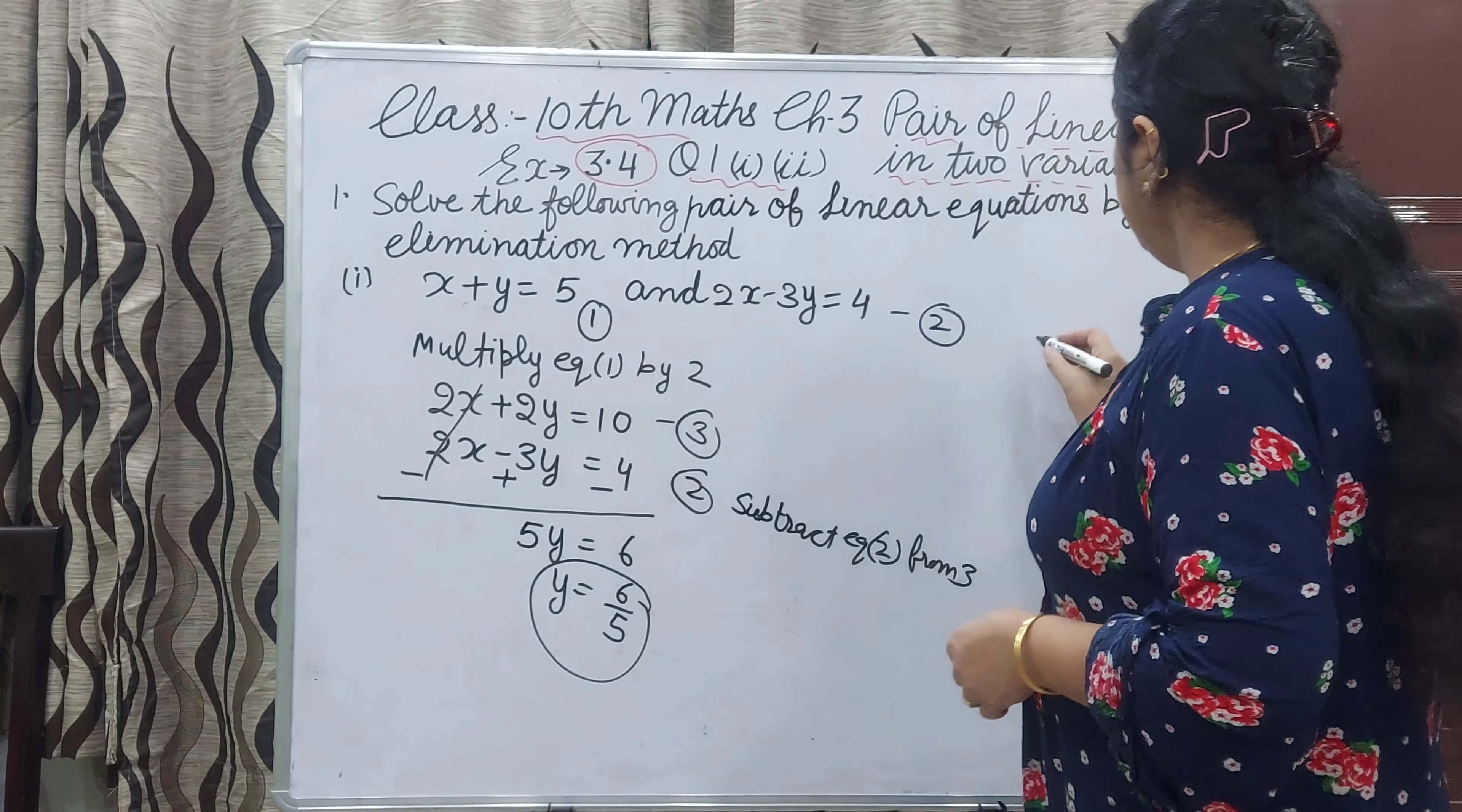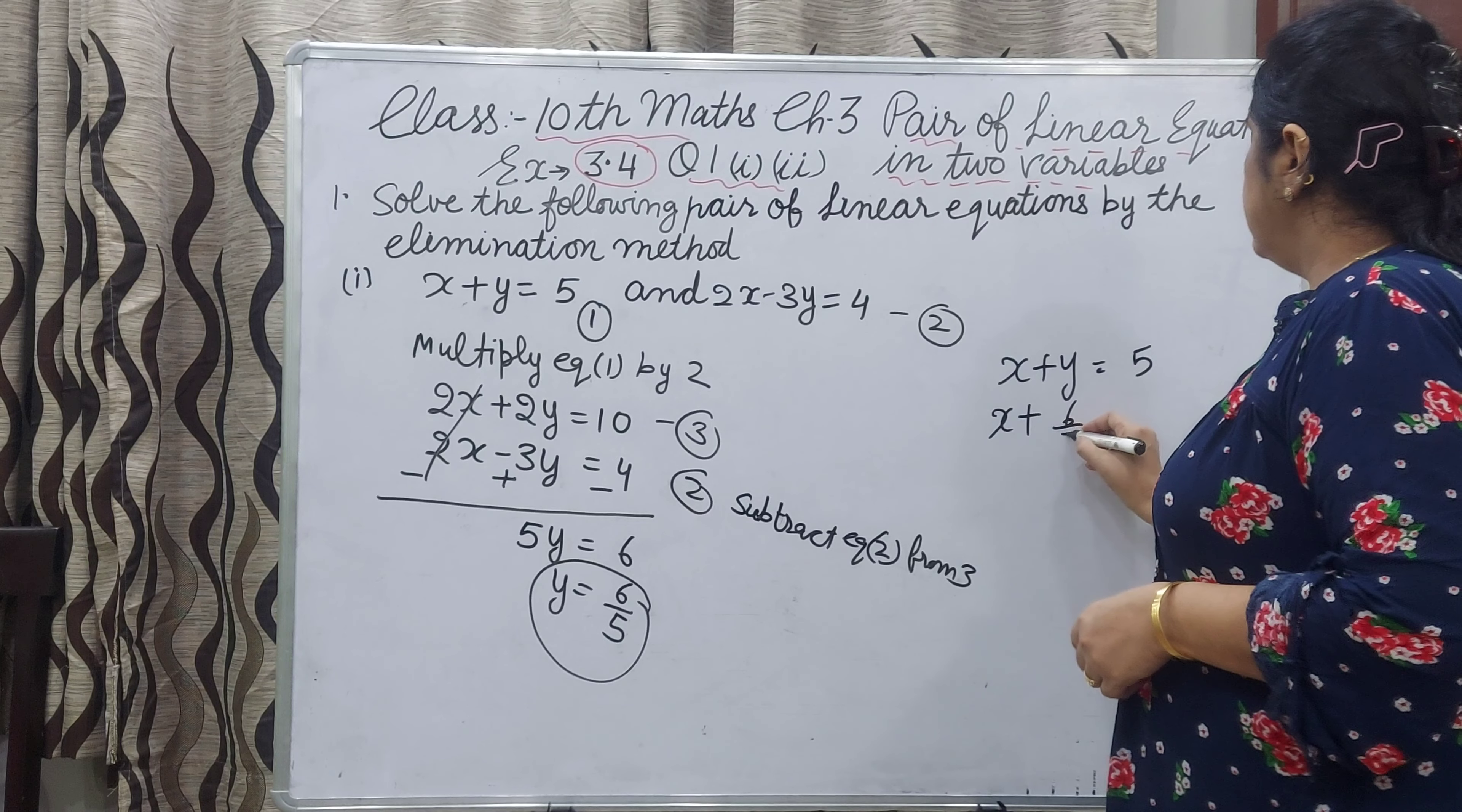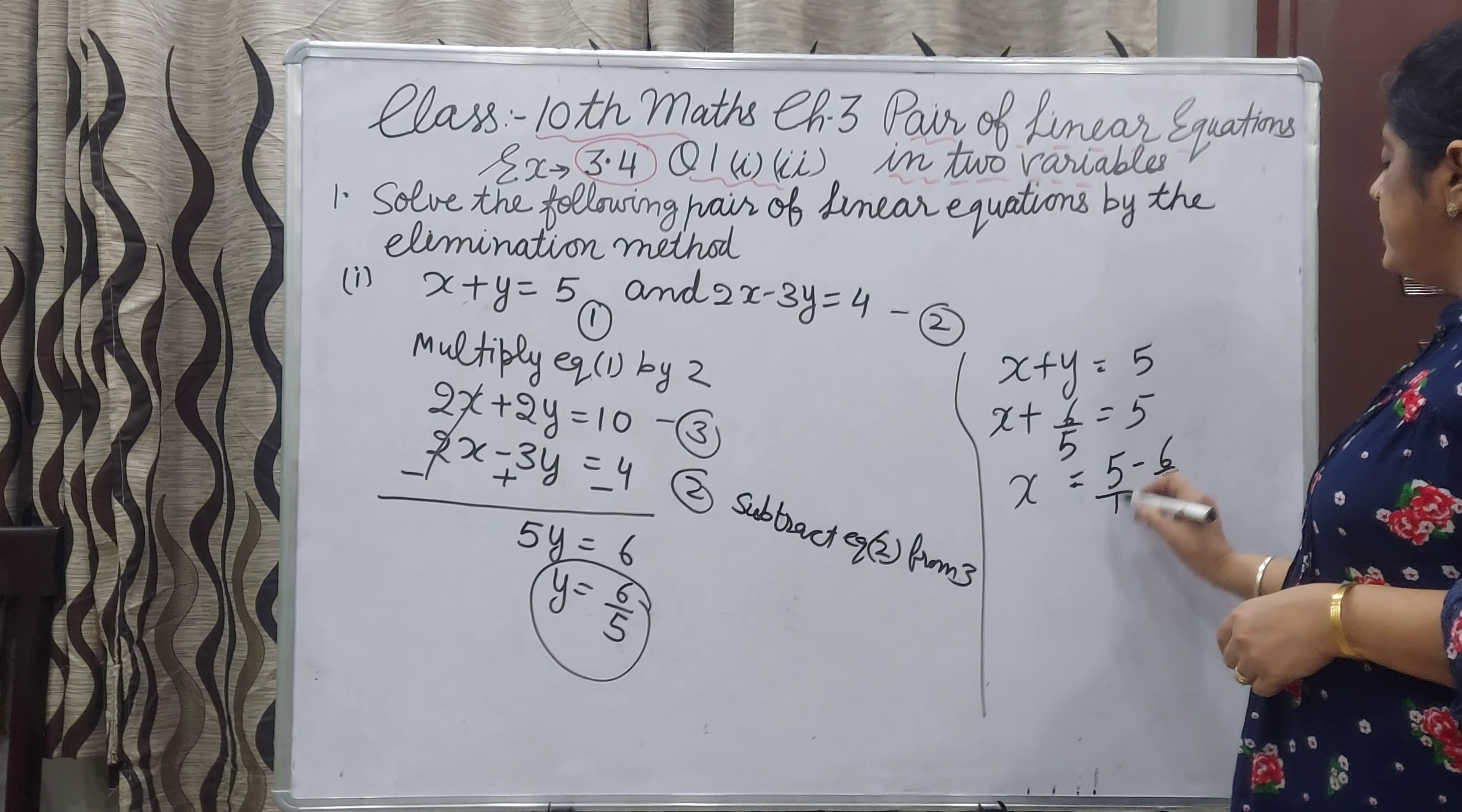Choose equation 1 because it is very simple: x plus y equal to 5. Put this y value here, 6 upon 5, equal to 5. X equal to 5 minus 6 upon 5. Here numerator is there, denominator is not there, you can write 1. Now take LCM.